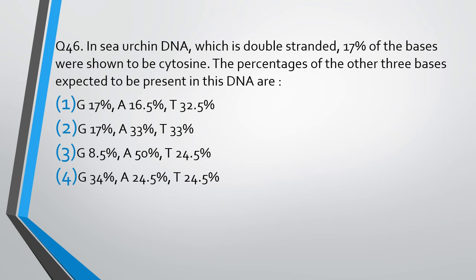In sea urchins, DNA which is double-stranded — 17% of bases are shown to be cytosine. The percentage of the other bases expected to be present in this DNA are given as options. The correct answer is option 2: guanine 17%, adenine 33%, thymine 33%. To derive this: considering total bases as 100, cytosine is 17%, which pairs with guanine at 17% — together they account for 34%. The remaining 66% is split equally between adenine and thymine, giving 33% each.